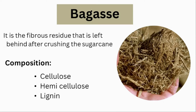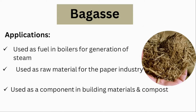Bagasse is one of the well-known by-products of the sugar industry. Bagasse is the fibrous residue that is left behind after crushing the sugar cane. The primary composition of bagasse is cellulose, hemicellulose, and lignin.